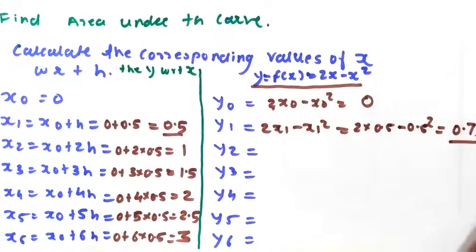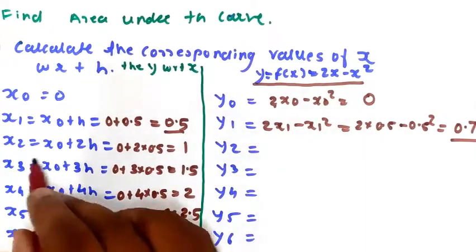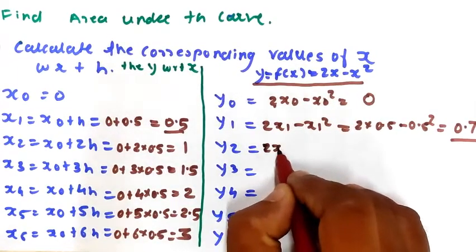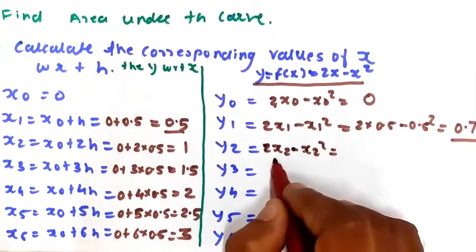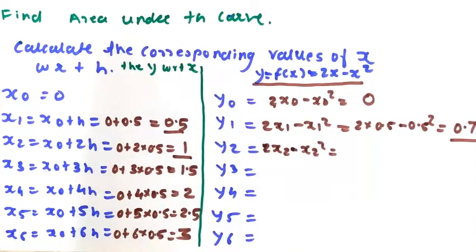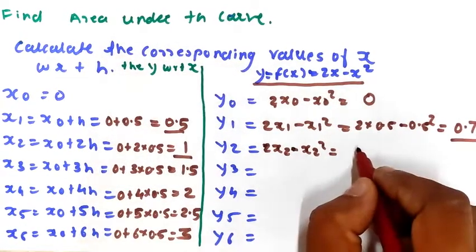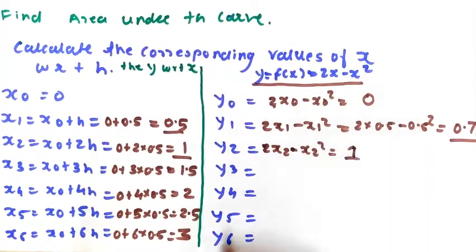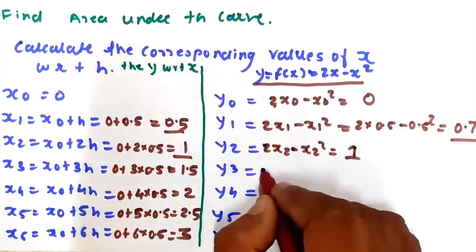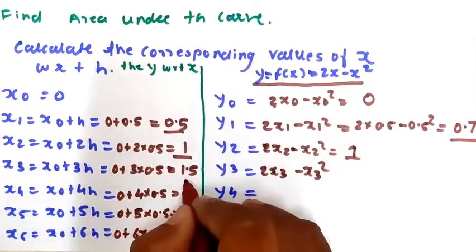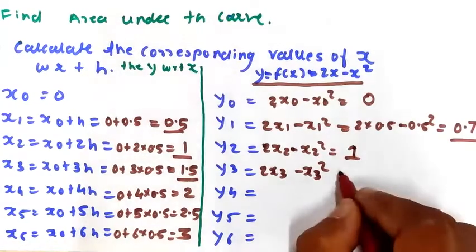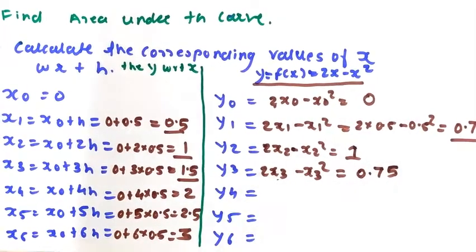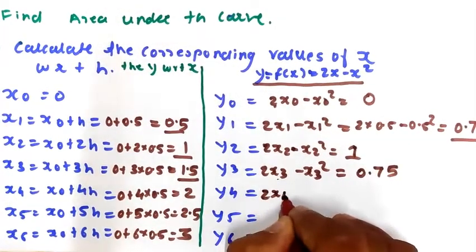For y2, substituting x2 = 1: y2 = 2×1 minus 1 squared = 2 minus 1 = 1. For y3, substituting x3 = 1.5: y3 = 2×1.5 minus 1.5 squared = 3 minus 2.25 = 0.75.